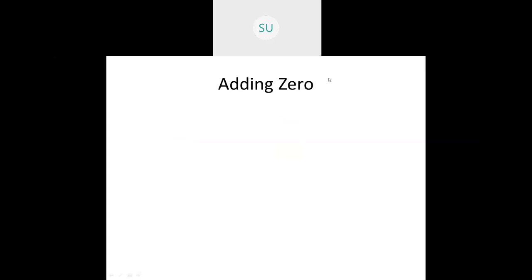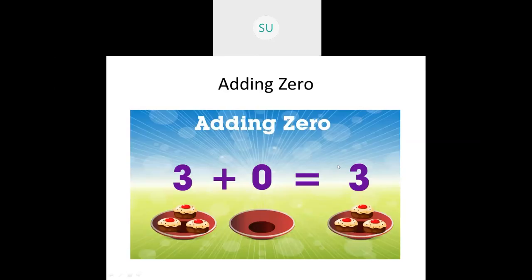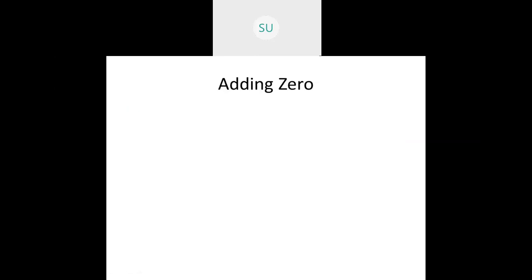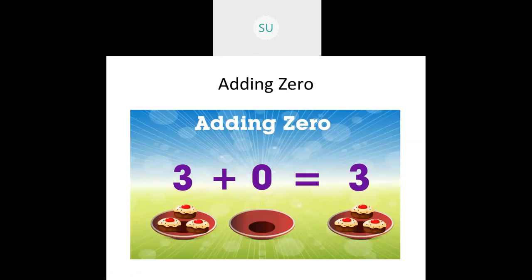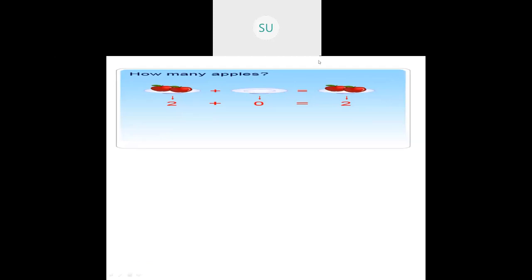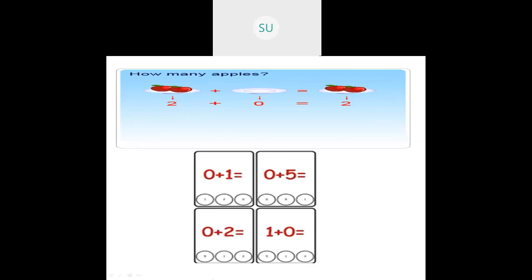Then we saw adding zeros. Adding zero means whenever you add zero to another number, you get that number itself, because zero means nothing — you are adding nothing. So three plus zero is three, two plus zero is two, zero plus one is one, zero plus five is five, zero plus two is two, and one plus zero is one.